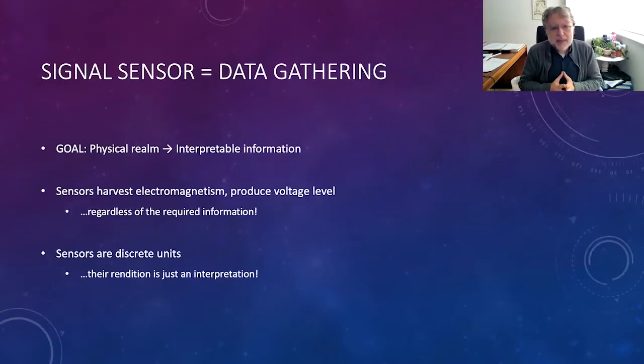Let's start by making a distinction between a signal sensor and the corresponding signal that it produces. The goal of a sensor is to convert an entity from the physical realm to an interpretable information in the form of a signal. Mostly, these sensors harvest electromagnetism and they mostly produce voltage levels, which we interpret in time series.